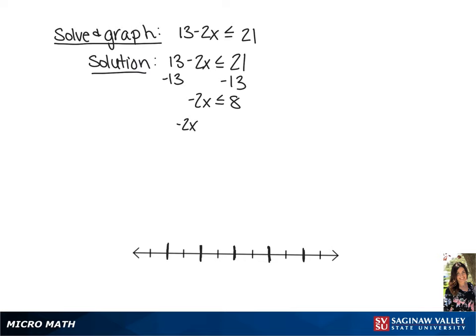Now we're going to divide both sides of the inequality by negative 2. And since we're dividing by a negative number, this means we have to flip the sign. This is going to give us the solution of x is greater than or equal to negative 4.